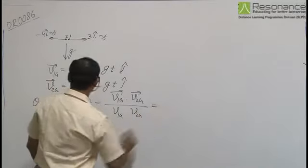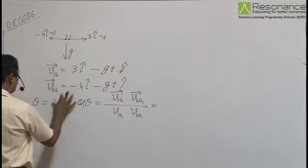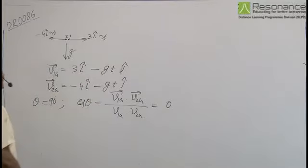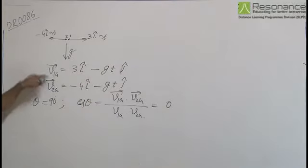For perpendicular, theta is 90 degrees and cos theta equals 0. That means the dot product of these two vectors has to be 0.